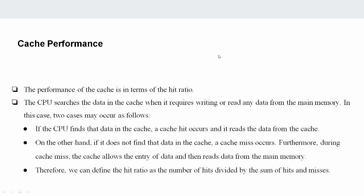There are some formulas. For example, we will talk about range data: 24, 18, 19, 64, 52. So we will talk about CPU. There are two possibilities. One is left in cache — so in cache present. After the one that comes to cache, we are left in cache.